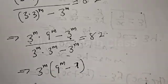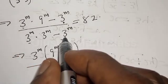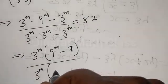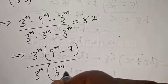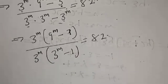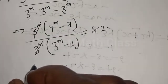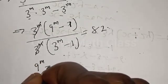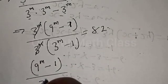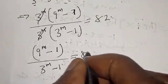We factor out 3 raised to power m from the numerator to get 9 raised to power m minus 1, and factor out 3 raised to power m from the denominator to get 3 raised to power m minus 1. We cancel 3 raised to power m, leaving us with 9 raised to power m minus 1, over 3 raised to power m minus 1, equal to 82.